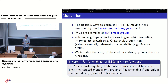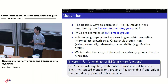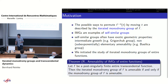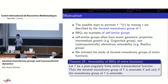Iterated monodromy groups are examples of self-similar groups, and self-similar groups often have very exotic geometric group properties. For example, one of the first examples of groups of intermediate growth, the celebrated Grigorchuk group, is a self-similar group. Similarly, the basilica group, which you have seen in the talks by Laurent and Volodia, is an example of a non-elementary amenable group. In my thesis, I initiated the study of iterated monodromy groups for entire functions.